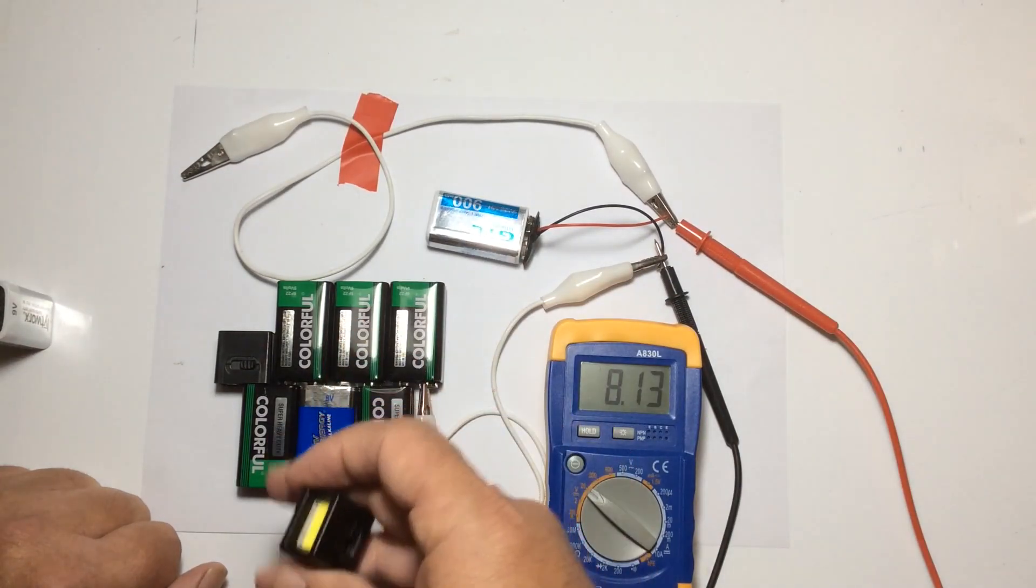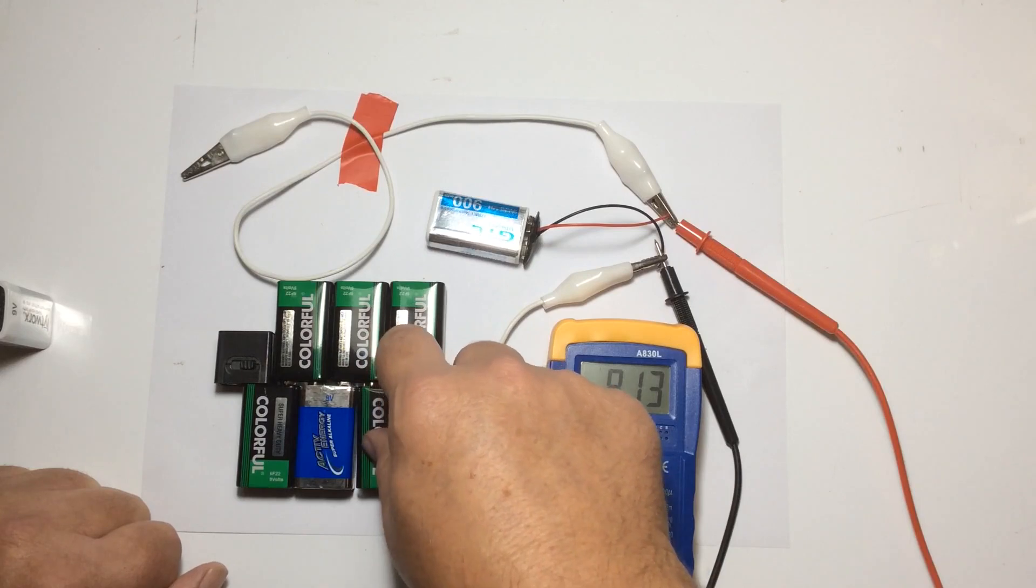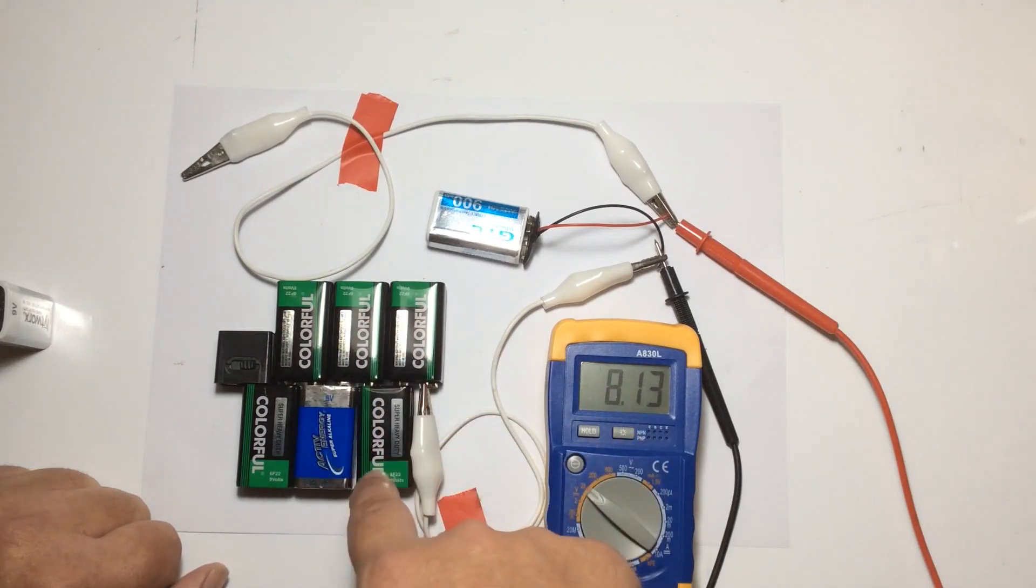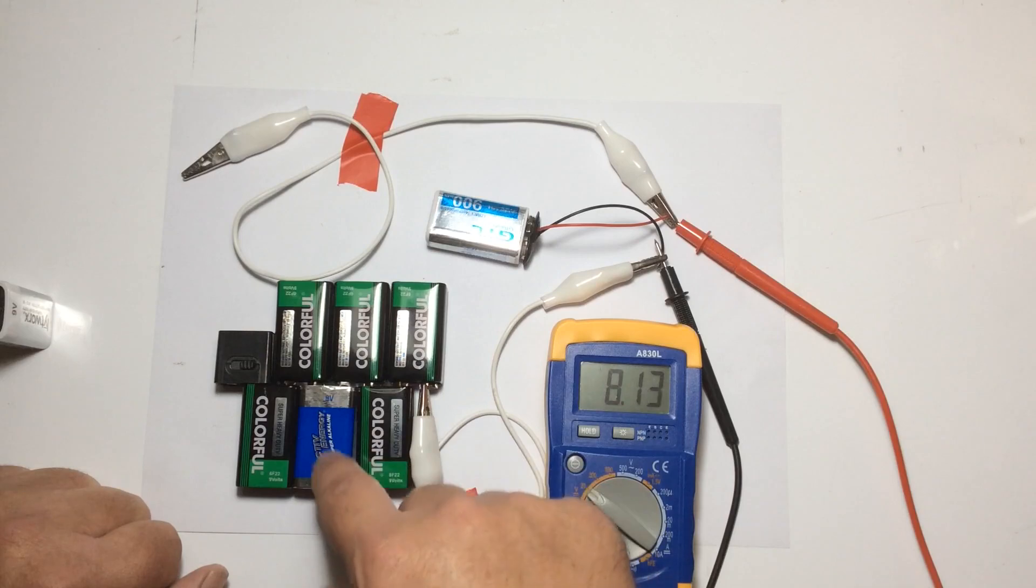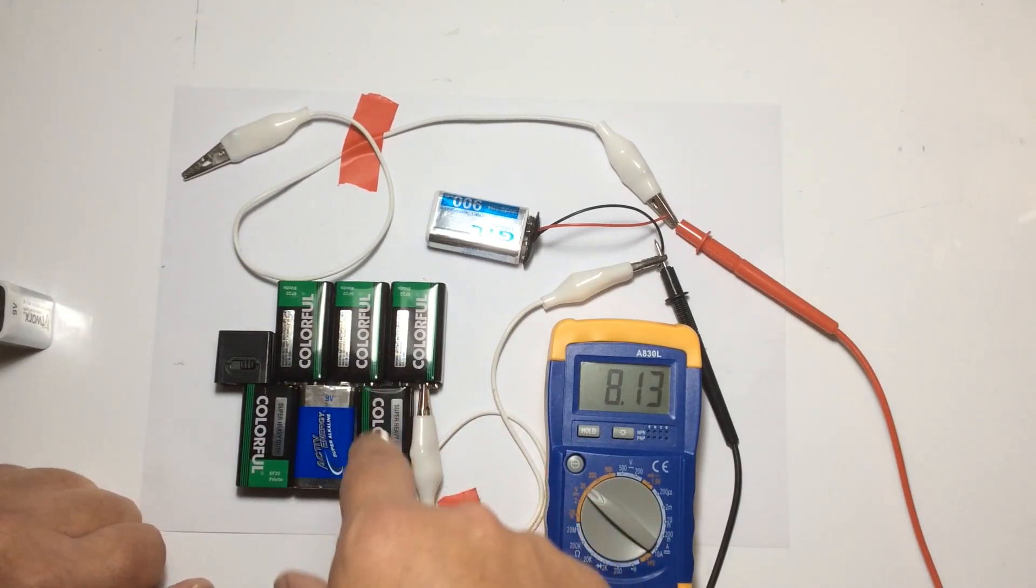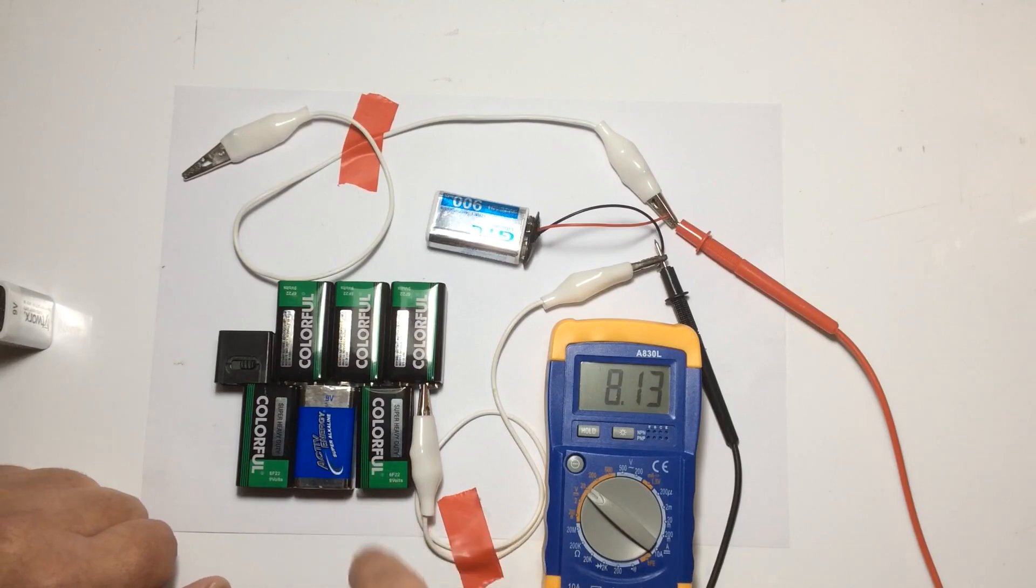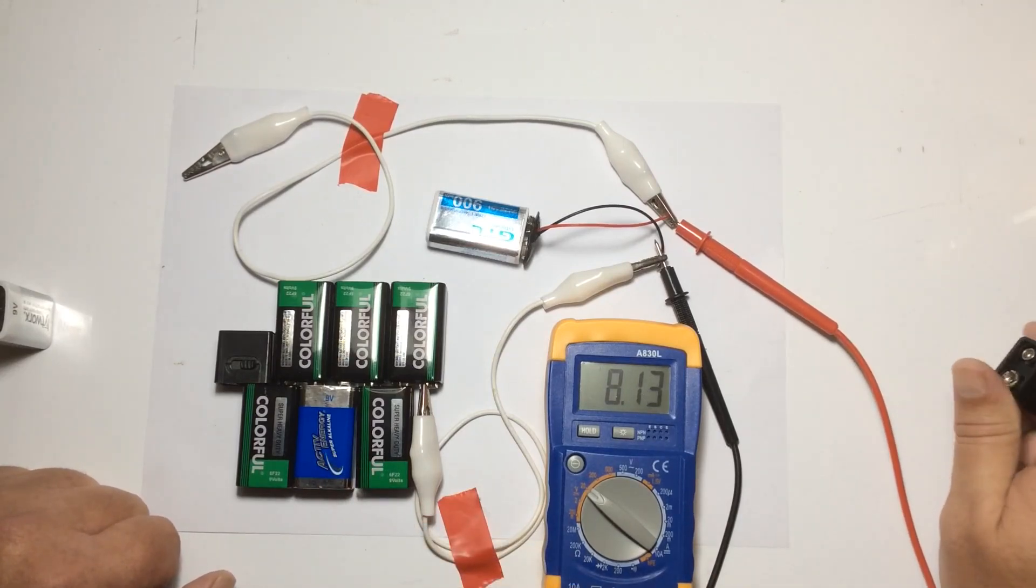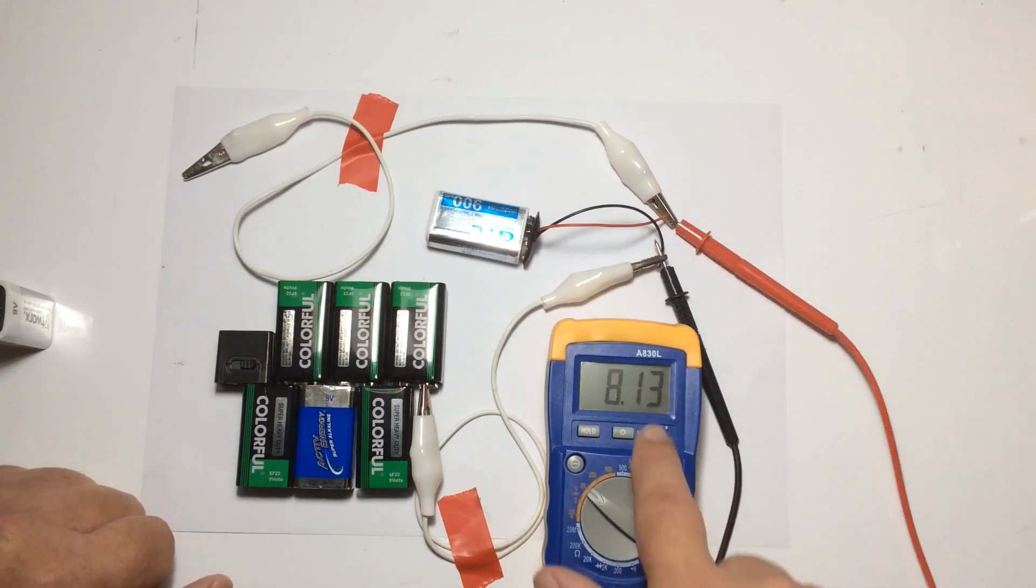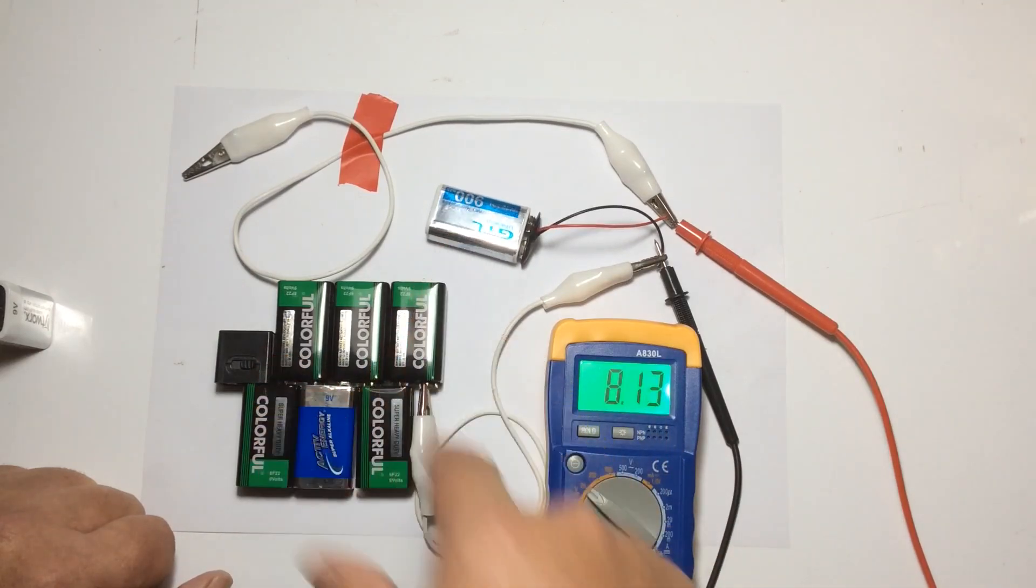Normally in the past, people would have made a joule thief to rob those batteries of their last remaining power, but you don't have to do that. You can do it this way and reclaim that power. So this is the voltage of the rechargeable battery.